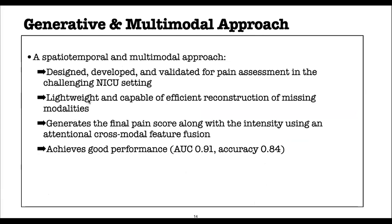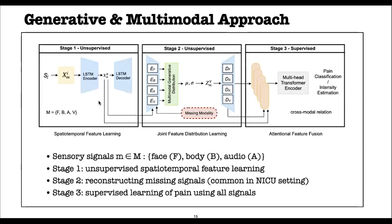To analyze different pain signals, we propose a multimodal approach designed for the challenging NICU environment. Our approach is lightweight and capable of constructing missing modalities, achieving good performance in generating both pain score and pain intensity. The proposed approach has three main stages. In the first stage, we use an LSTM-based autoencoder with unlabeled data to learn spatiotemporal features from the pain signals. In the second stage, we use a variational autoencoder to learn the joint probability distribution of four feature vectors corresponding to the four pain signals: face, body, audio, and vital signs.